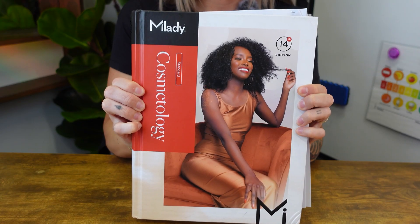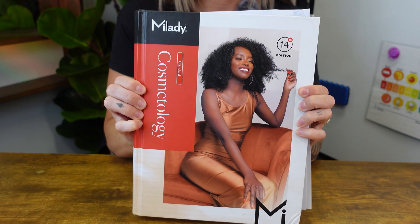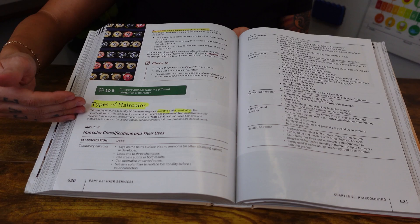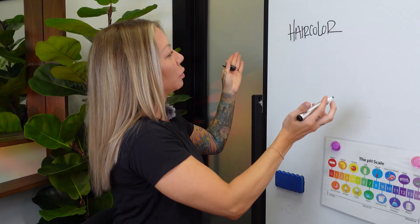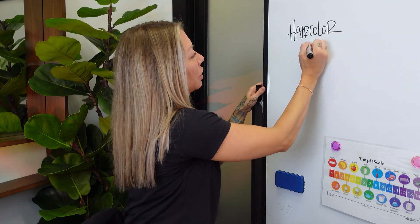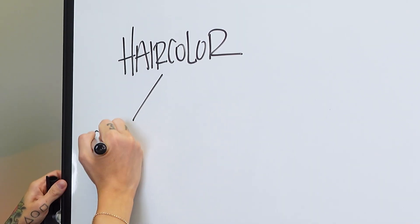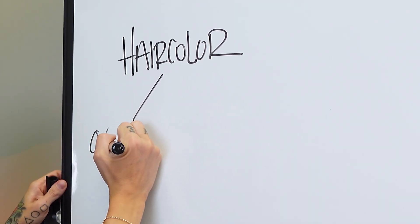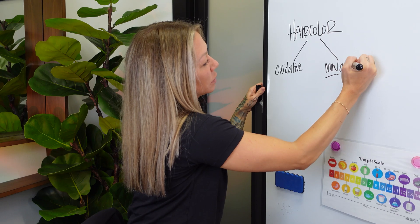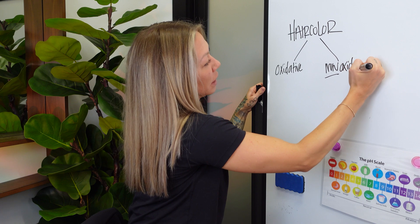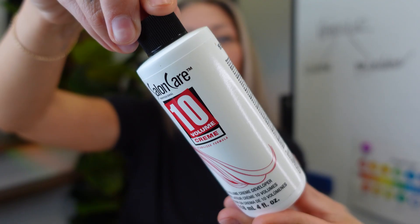Today we're going to cover the types of hair color. This theory will be in your newest Milady book and we're starting on the bottom of page 620. When we talk about hair color it can either be oxidative or non-oxidative, and it's going to fall in one of those categories.